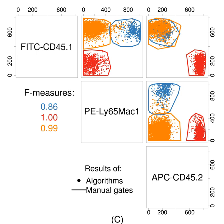The total signal to remove from each channel can be computed by solving a system of linear equations based on this data to produce a spillover matrix, which when inverted and multiplied with the raw data from the cytometer produces the compensated data. The processes of computing the spillover matrix, or applying a pre-computed spillover matrix to compensate flow cytometry data, are standard features of flow cytometry software.